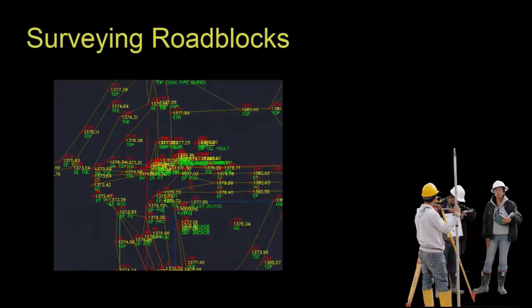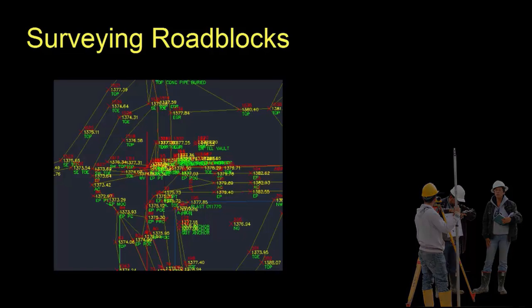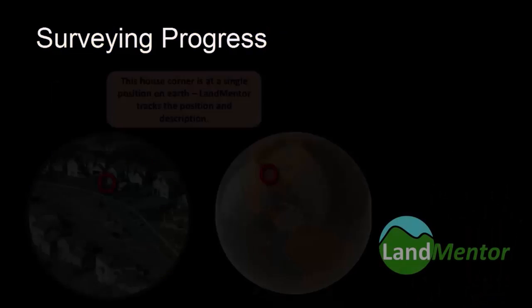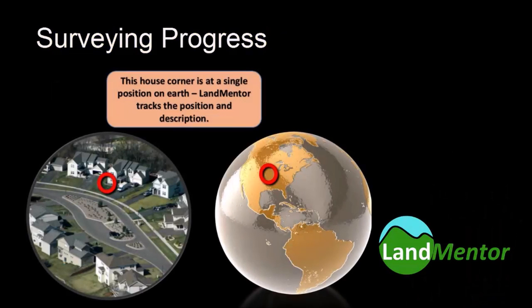Point number management, which did not exist before computers, is one such problem. With LandMentor, the world's first positional coordinate geometry can ultimately eliminate point numbers and their tedious management from the land surveying profession. For general land surveying and precision mapping, there is simply no better tool.